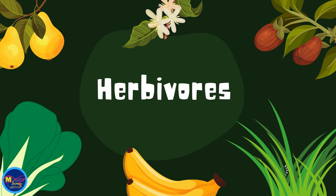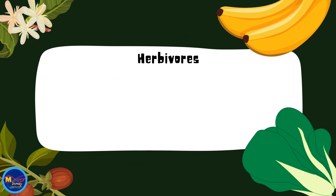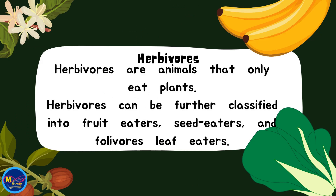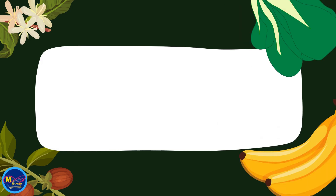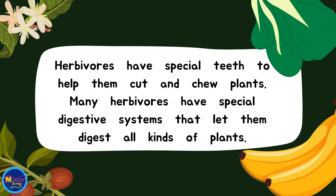Herbivores are animals that only eat plants. Herbivores can be further classified into fruit eaters, seed eaters, and folivore leaf eaters. Herbivores have special teeth to help them cut and chew plants. Many herbivores also have special digestive systems that let them digest all kinds of plants.